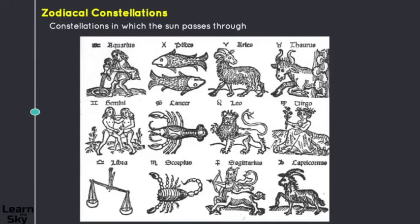If we look at the different constellations, you can see that many of them are represented by different animals. Of course if you have ever heard of the signs of the zodiac, or you follow any type of astrology, you will notice that these are the signs of the zodiac. At one time astronomy and astrology were the same thing, but in the past 400 years and since the Enlightenment period, these two things have deviated and are no longer the same thing. As long as the sun passes through these different types of constellations, it's considered a zodiacal constellation.